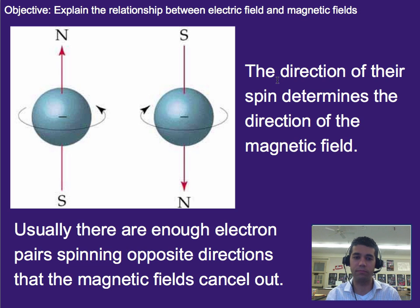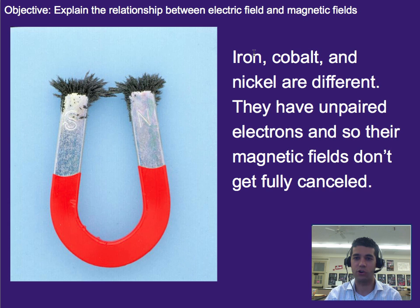Now those of you who take chemistry may know that usually there are enough electron pairs spinning in opposite directions, much like this one and this one are spinning in opposite directions, that those magnetic fields end up cancelling out, meaning that you have one upspin for every downspin, and they basically cancel, so things usually aren't that magnetic. However, certain materials like iron, cobalt, and nickel are a little bit different. That is, they have a few extra unpaired electrons, a couple extra upspin electrons, and as a result it generates a magnetic field that's not cancelled, so it's a net magnetic field.